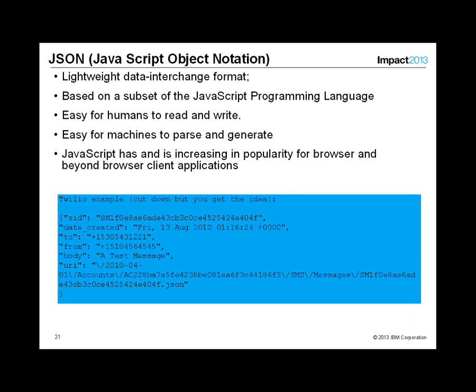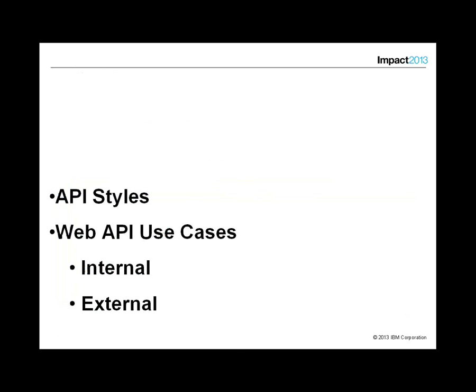JSON is also a popular interchange format, based on the JavaScript programming language. It's easy for humans to read and write, and for machines it's easier to parse — it's a lot more lightweight than XML with fewer tags. The same example you saw in XML is shown converted to JSON in the bottom half of the screen.